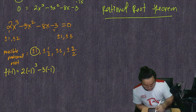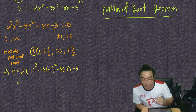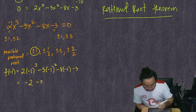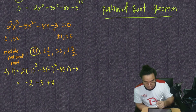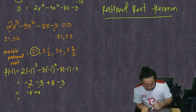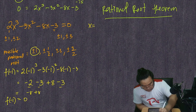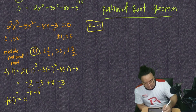f(−1) = 2(−1)³ − 3(−1)² − 8(−1) − 3 = −2 − 3 + 8 − 3 = 0. So f(−1) = 0, meaning x = −1 is a root. Let's find the other roots using synthetic division.